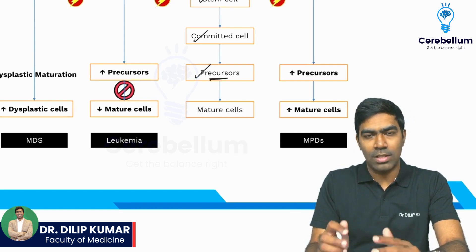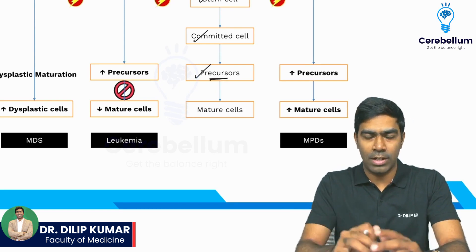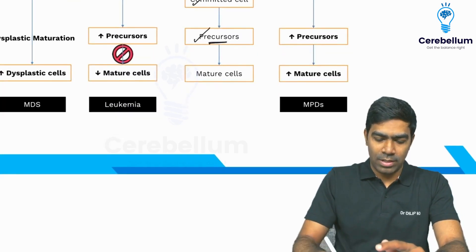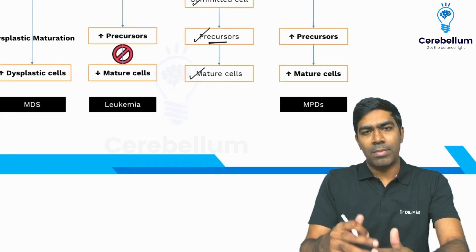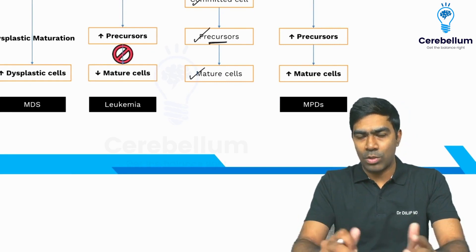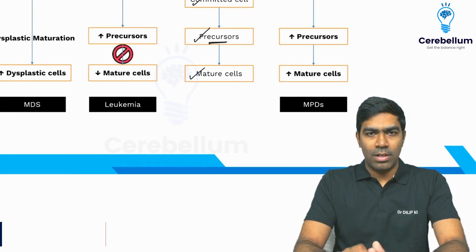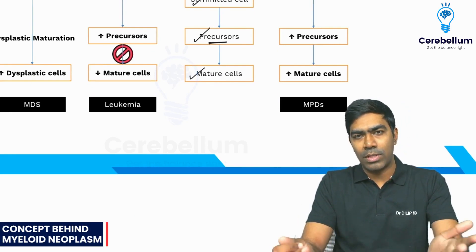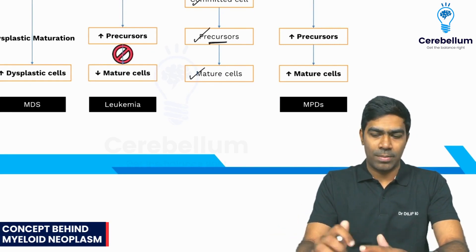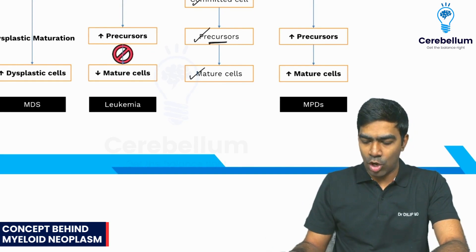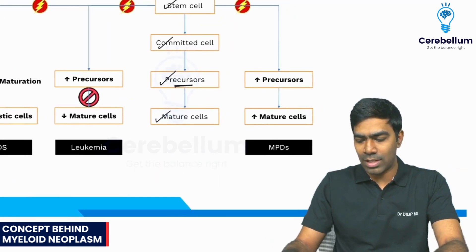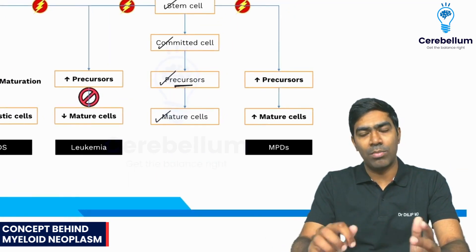These cells become precursor cells of that particular lineage, and these precursor cells ultimately become mature cells — for example, RBCs, various WBCs, and platelets. This is the normal differentiation process occurring in the bone marrow.